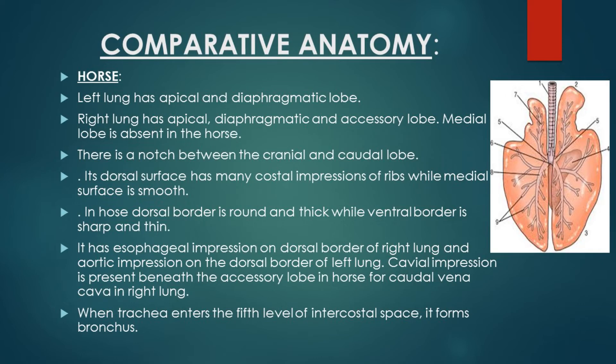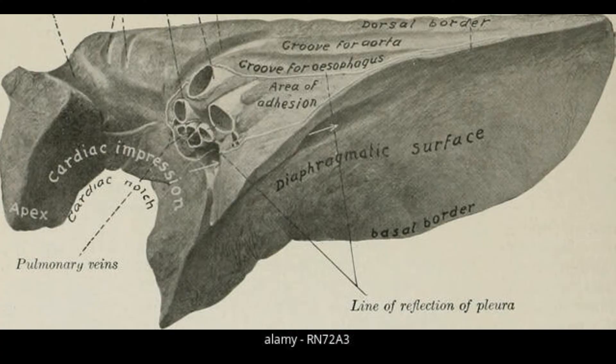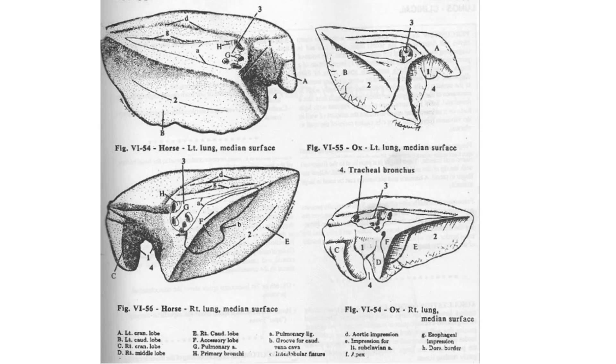Now let's come to the anatomy of the lung of horse. The left lung of horse has an apical and diaphragmatic lobe, same as that of ox. The right lung of horse has only three lobes: apical, diaphragmatic, and accessory lobe — the medial lobe is absent in horse. In case of horse, there is a notch between both the cranial and caudal lobes of both lungs.